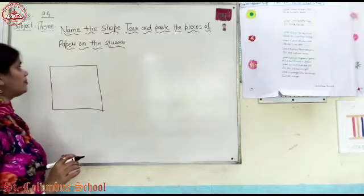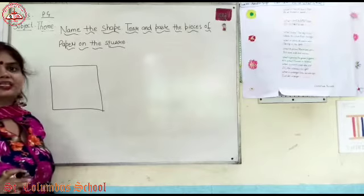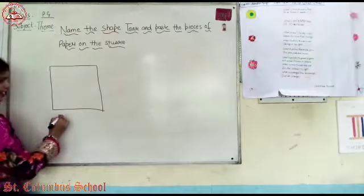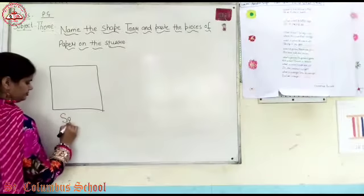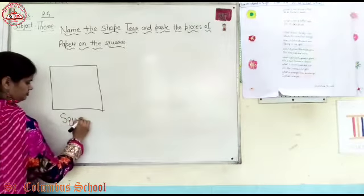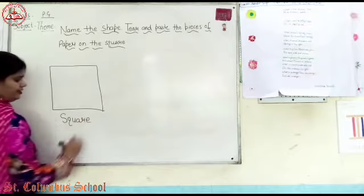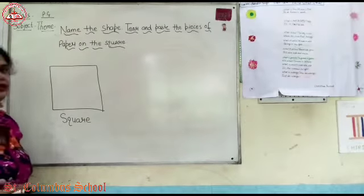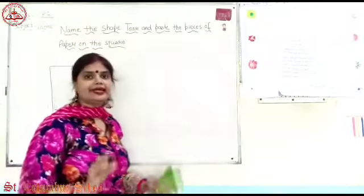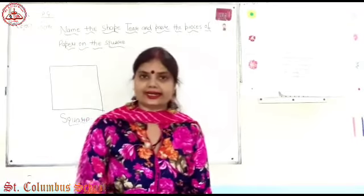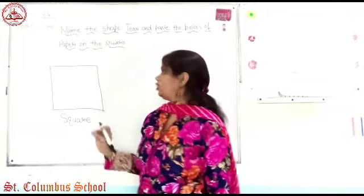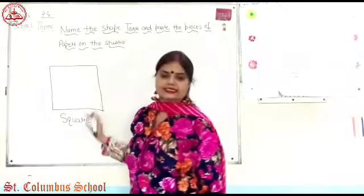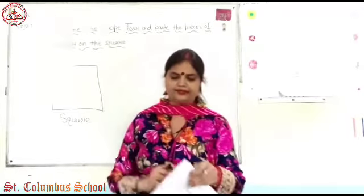Name the shape. Tear and paste the pieces of paper on the square. Which picture is a square? You have the paper. You've got to paste it, and the paper will adjust. You'll put paper on the spot as a square.